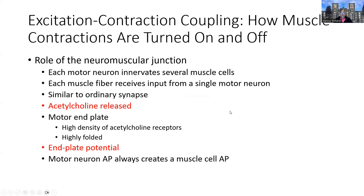At the neuromuscular junction, we want to remind ourselves that we have a single motor neuron, and that can innervate many muscle cells or muscle fibers. Each muscle fiber, however, can only receive input from one motor neuron. We have a regular traditional synapse in that we have the neuron synapsing onto the motor end plate, and the same types of events apply — vesicles are present, receptors on the other end, acetylcholine crosses the junction.